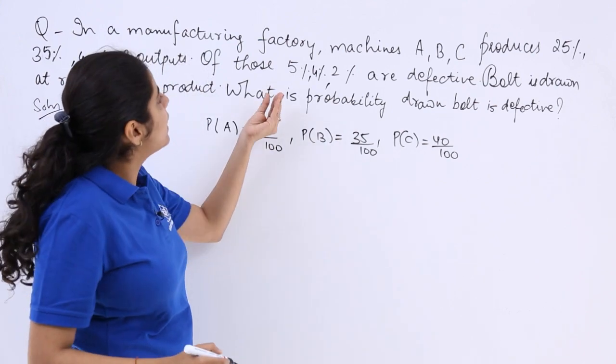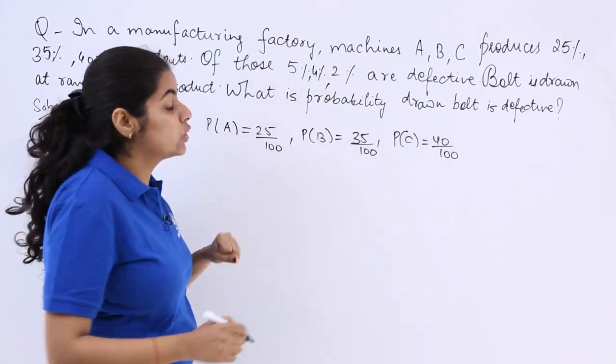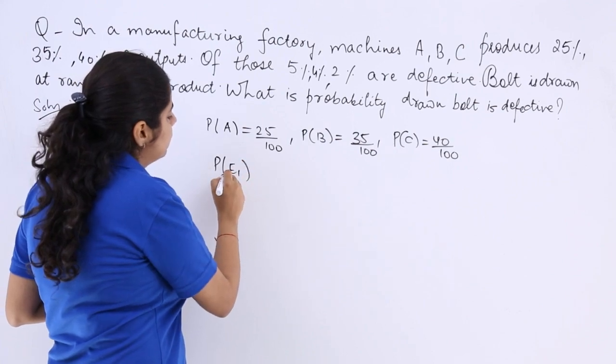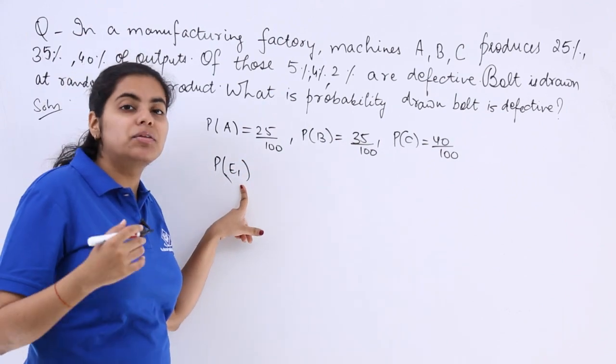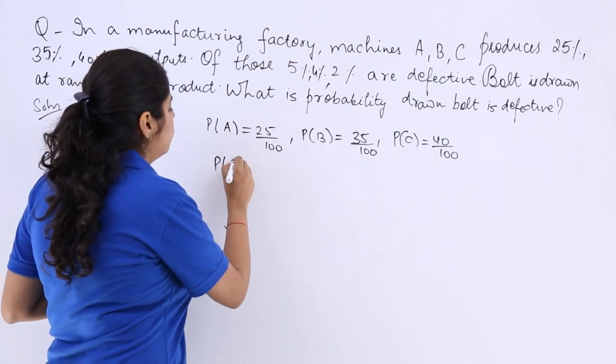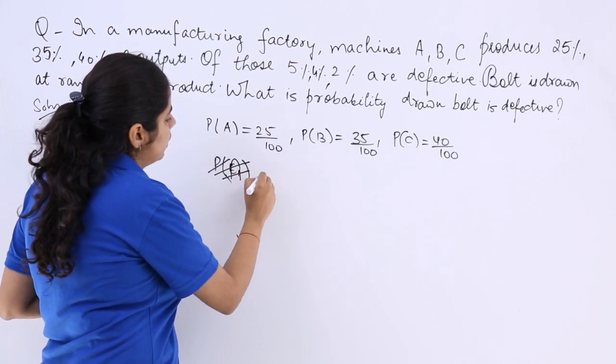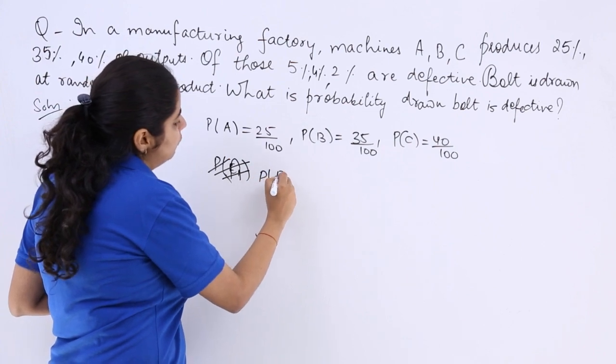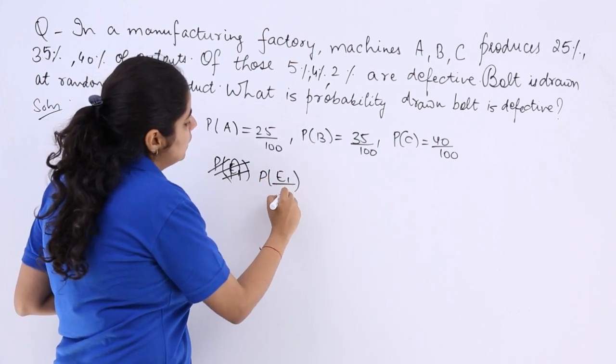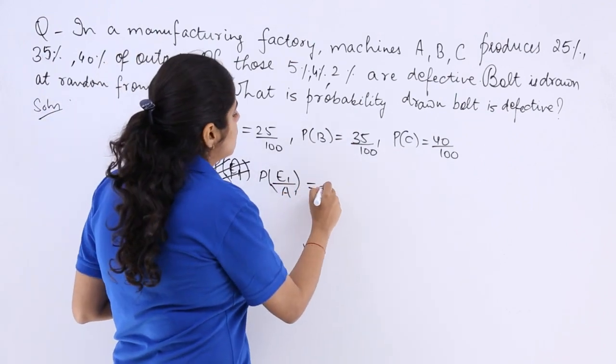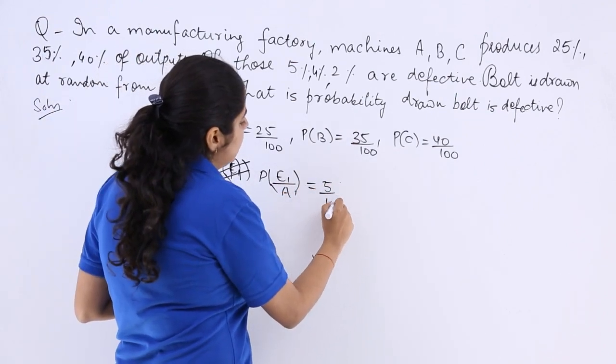Now, what do I have to do? I have defective. Defective, probability of E1. If I write that, would be a different event. So better, let's include conditional probability. Probability of defective when considered it is from A, it is given to you as 5%. That means 5 by 100.